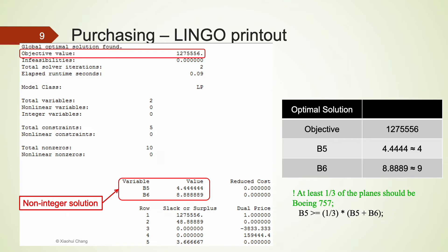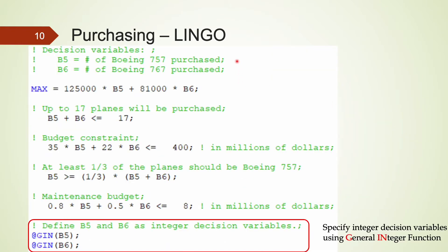Can we round the numbers to the nearest integers instead? When we do that, we should purchase 4 757 jets and 9 767 jets. But 4 and 9 are infeasible solutions because we will not be able to meet the last constraint that says at least a third of the planes should be 757 jets. So instead of defining B5 and B6 as real number decision variables, we should force LINGO to only consider integer-valued solutions.